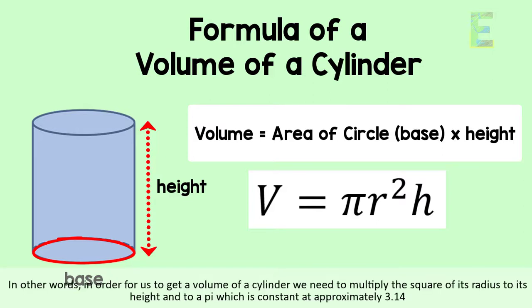In other words, in order for us to get a volume of a cylinder, we need to multiply the square of its radius to its height and to pi, which is constant at approximately 3.14.